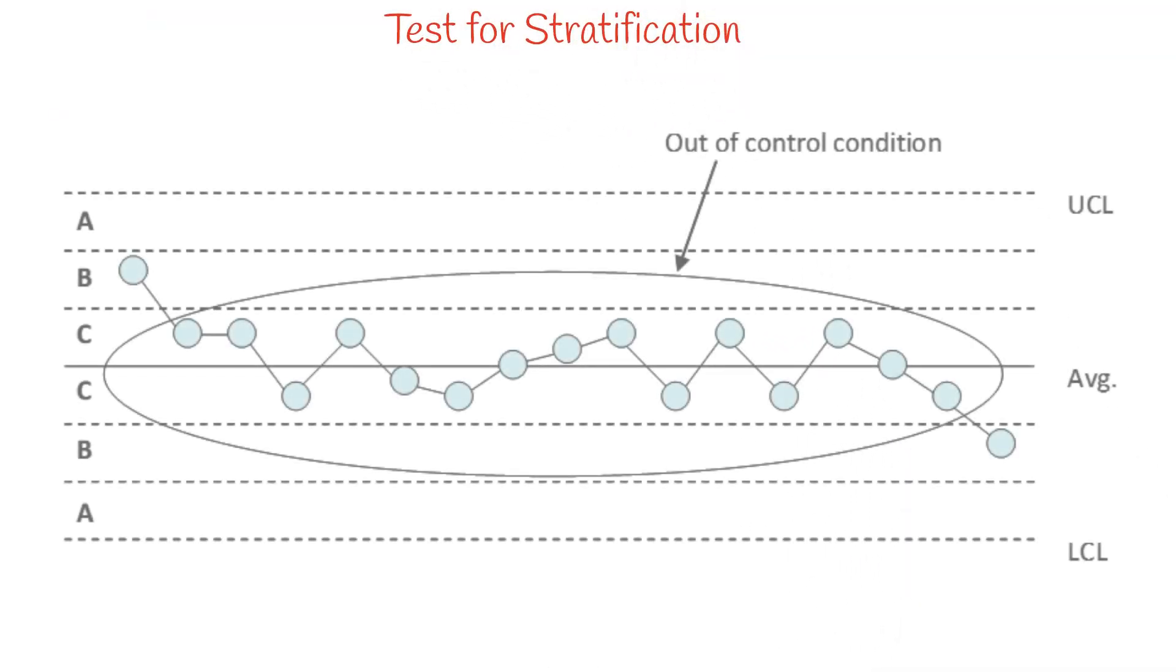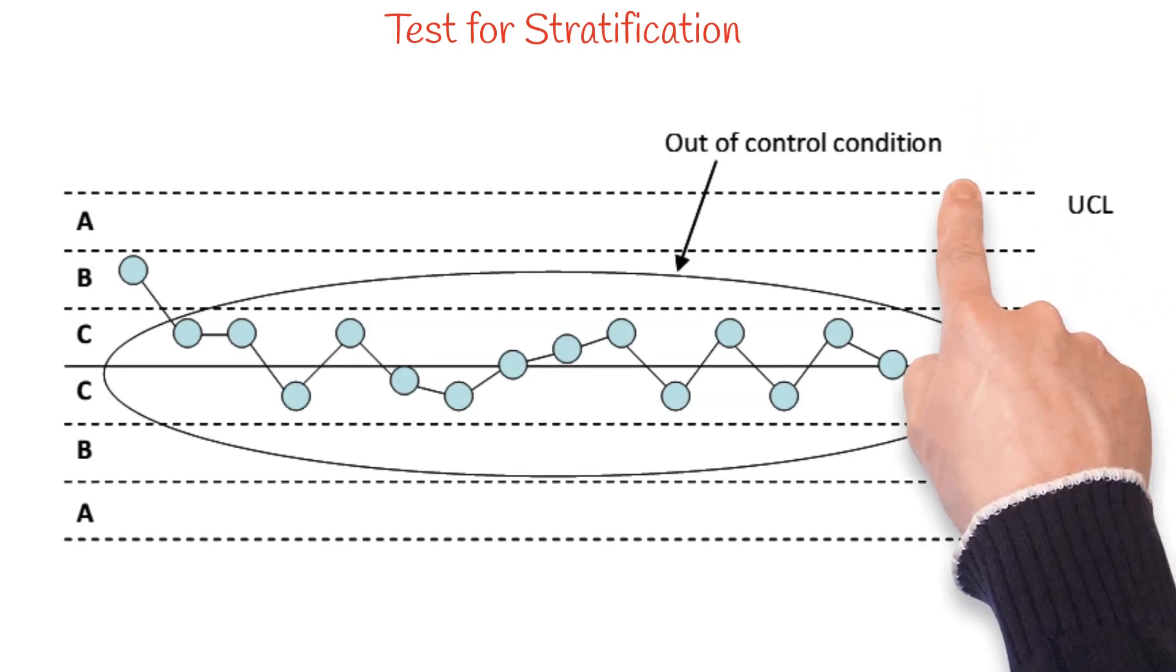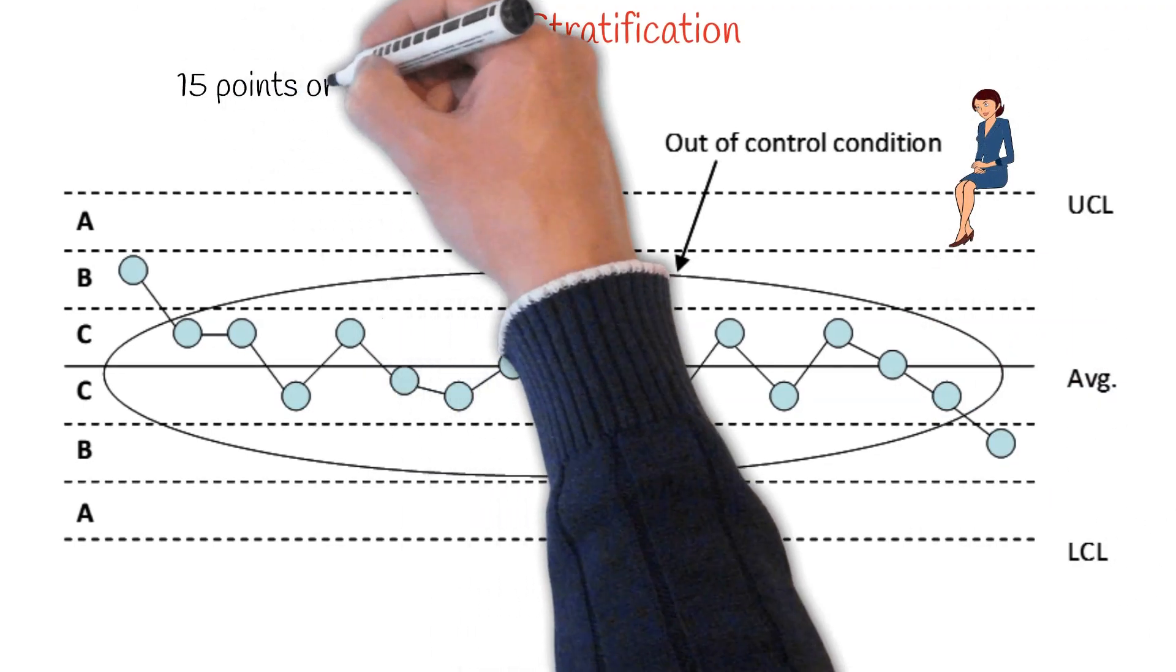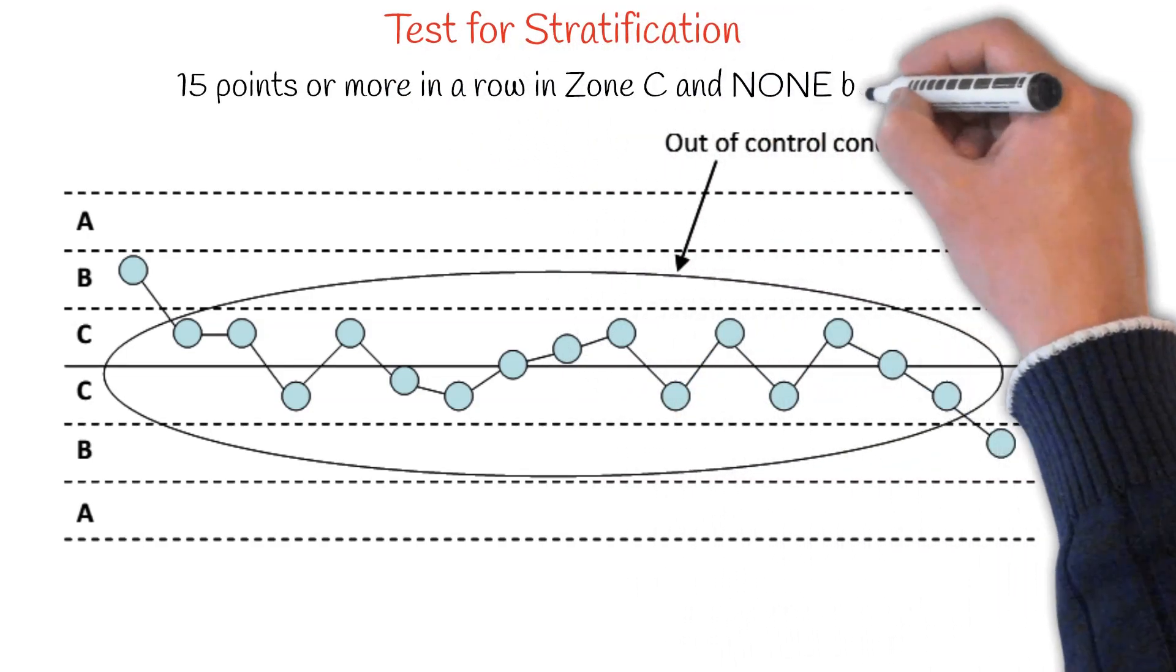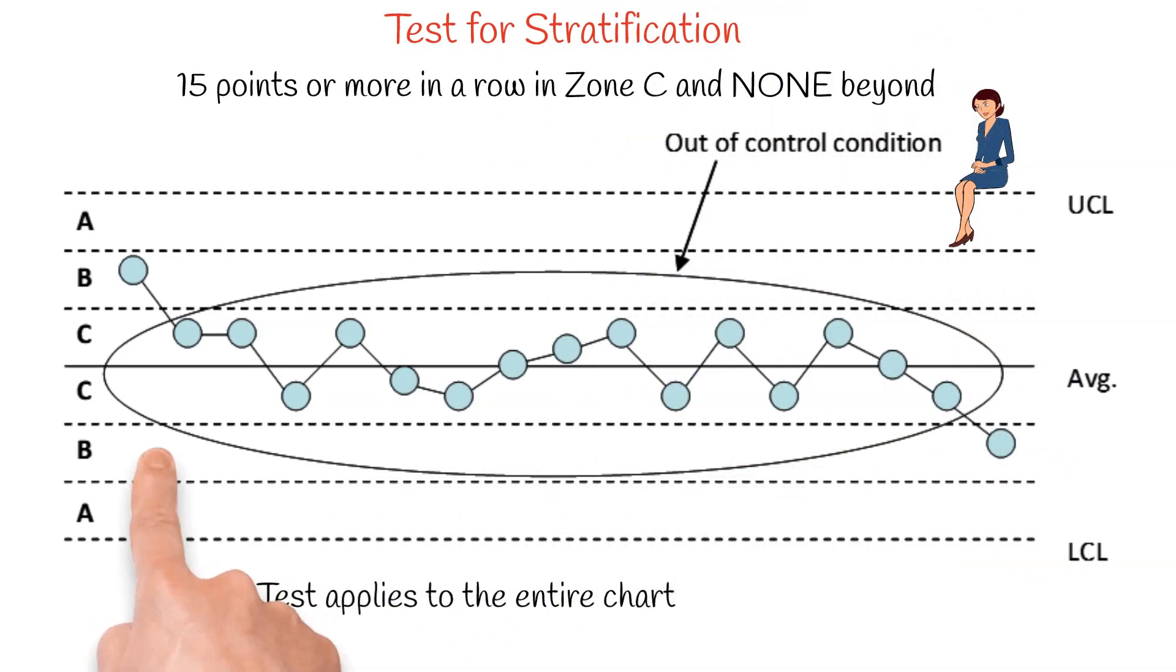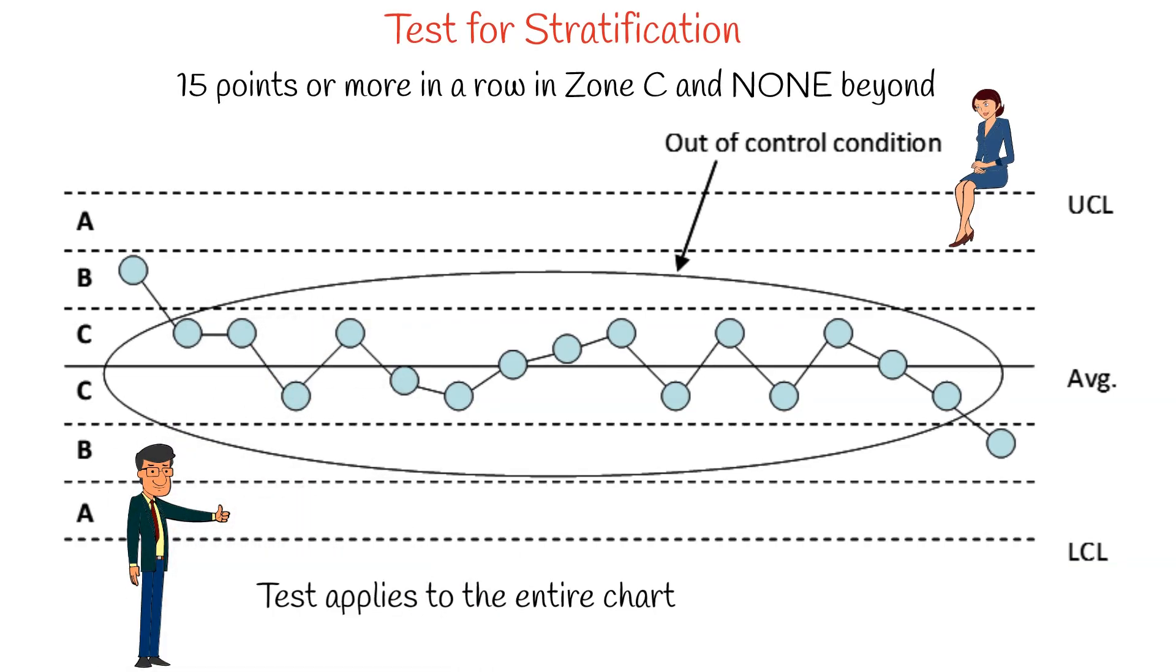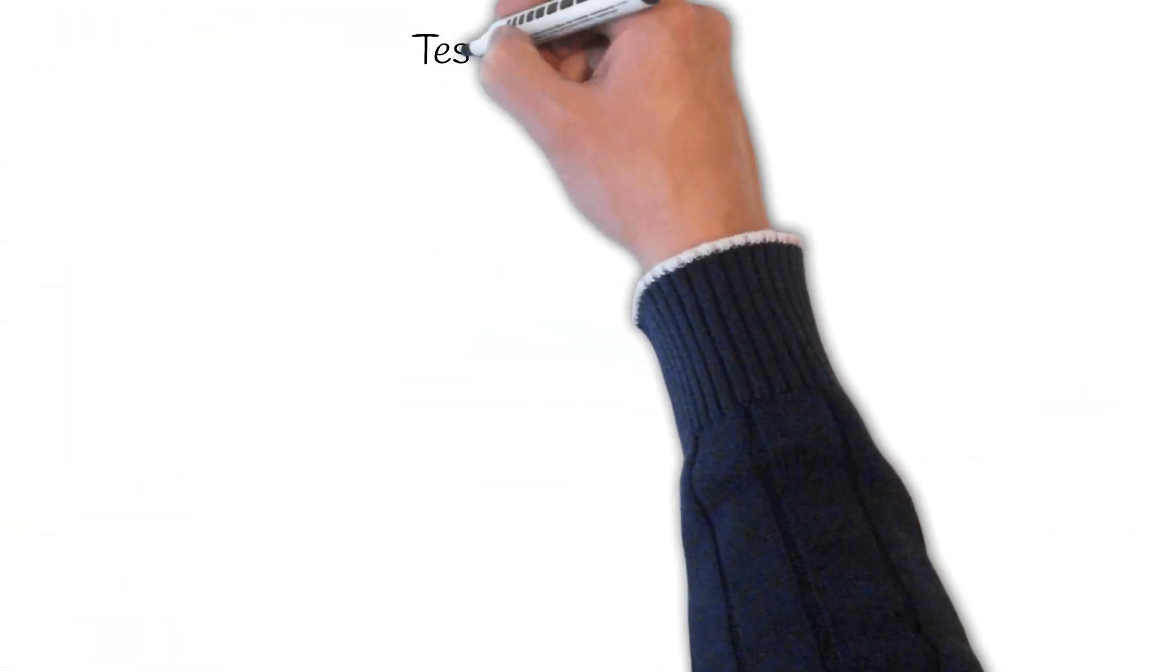Here's a test for stratification. In this test, you're applying it to the entire chart. The out of control situation is going to occur if you have 15 or more points in a row in zone C and none beyond on either side of the average. So all you have is 15 points in a row in zone C, none out of zone C.